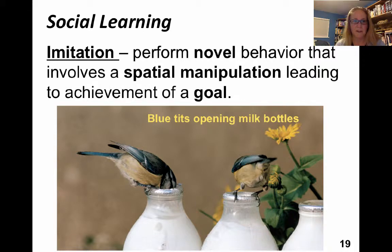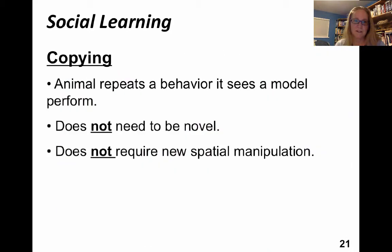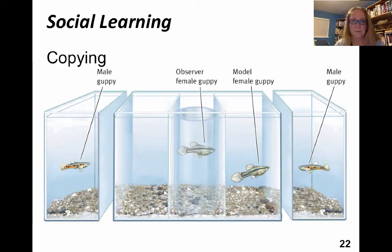We were looking at social learning, and we had discussed imitation, where an individual performs a new behavior — it has to involve spatial manipulation, and there has to be some goal, like maybe a food reward. Then we talked about copying. In copying, the animal is repeating a behavior that it sees, but it doesn't have to be a novel behavior and it also doesn't have to involve spatial manipulation. We talked about the guppy example where an observer female might end up copying the behavior of a model who expresses a preference, whether she has it or not, for a particular male.